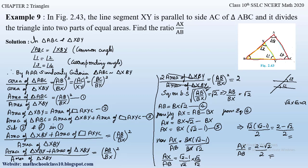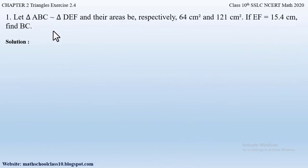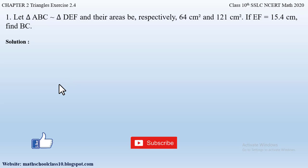This is the answer: AX/AB equals (2 − √2)/2. This is an important problem, so practice and understand it well for better scoring. If you have any doubts, comment below. In my next video I will start Exercise 2.4, Question 1. Do like, subscribe, and hit the bell button for the latest updates as I complete the whole syllabus for Class 10 CBSE Math.